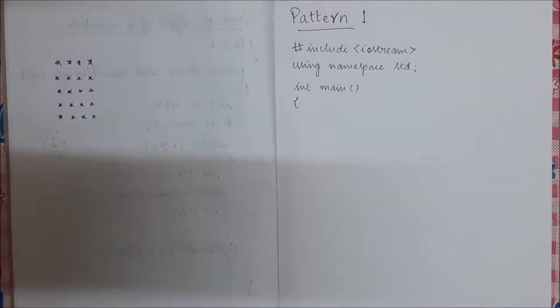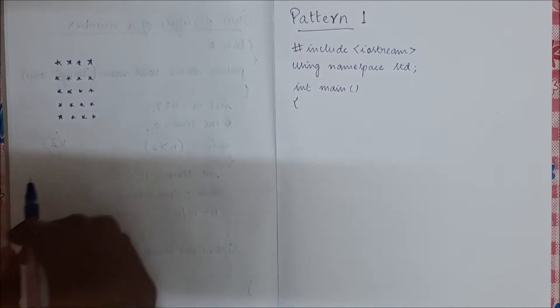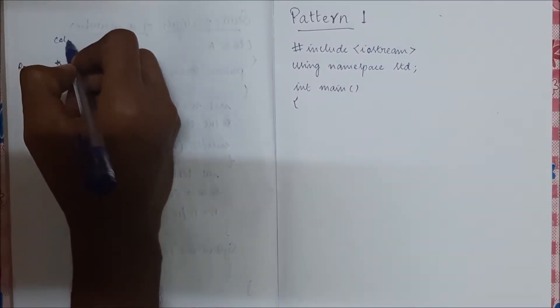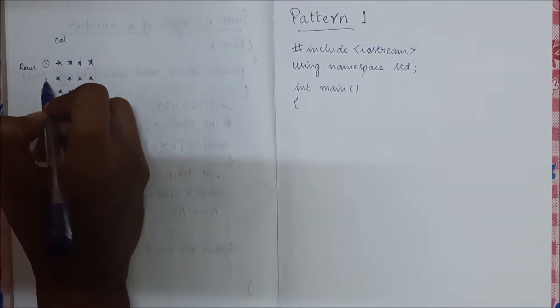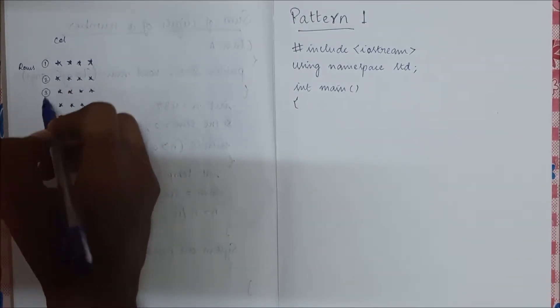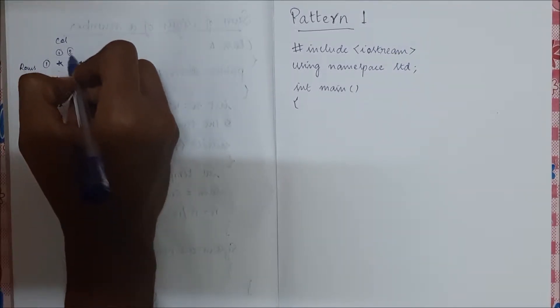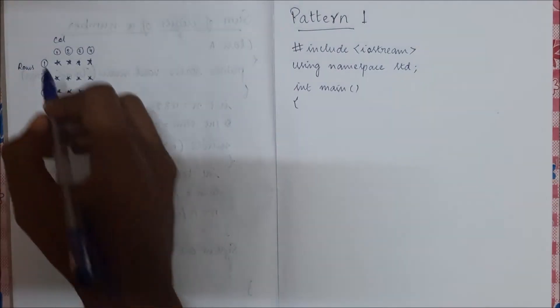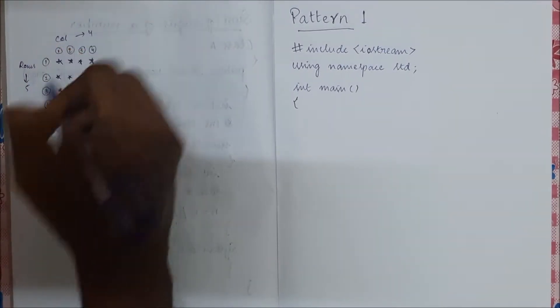Hello, in this video I'll show you how to print this pattern. So these are the rows and these are the columns. This is row number one, row number two, row number three, four, and five. We have column one, column two, column three, and column four. So we have rows as five and four columns in total.